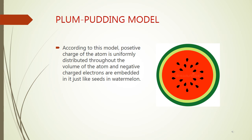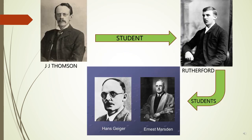J.J. Thomson's model, also called the plum pudding model. According to this model, positive charge of the atom is uniformly distributed throughout the volume of the atom and negatively charged electrons are embedded just like seeds in a watermelon. The plum pudding model was based on hypothesis.